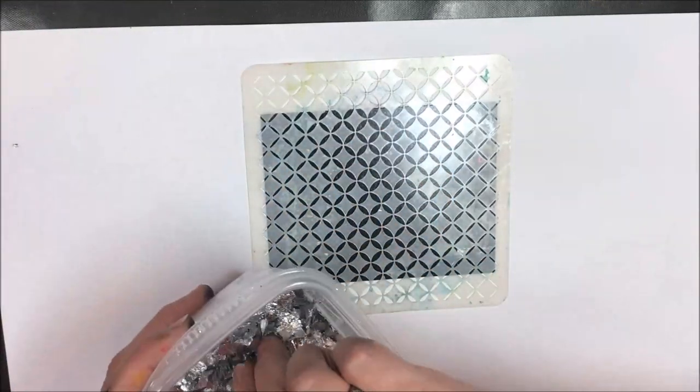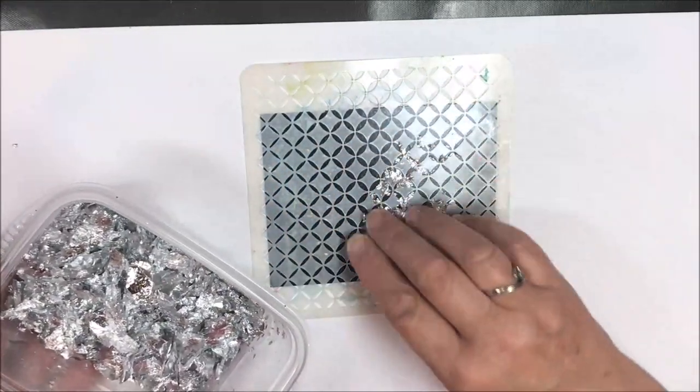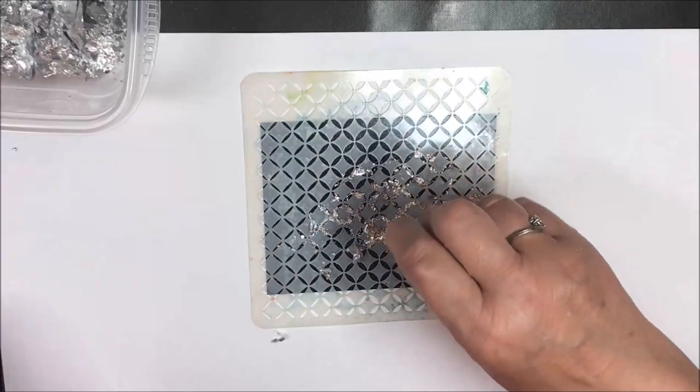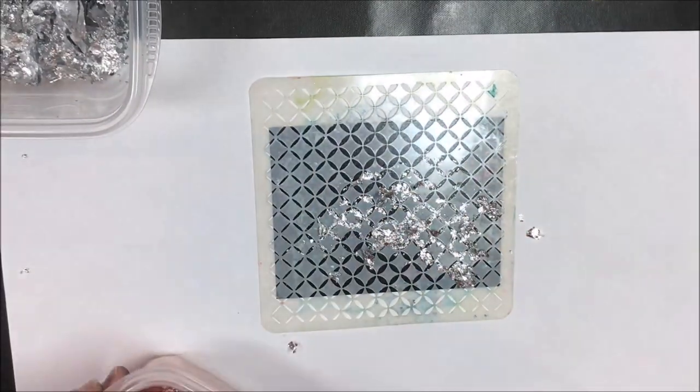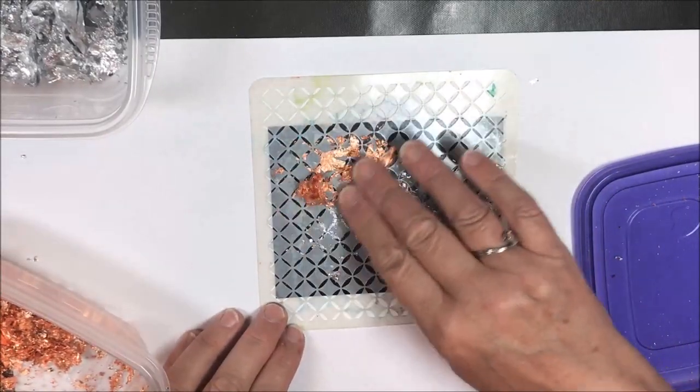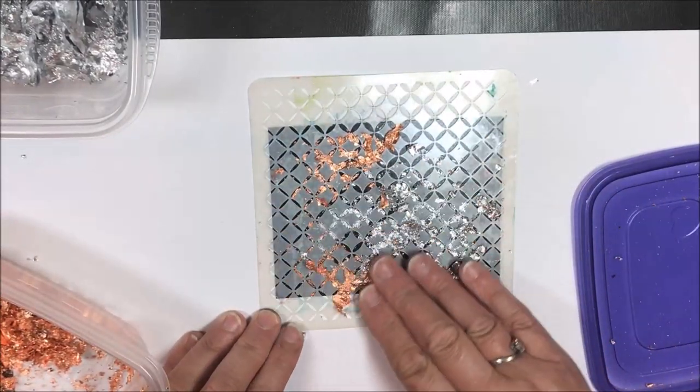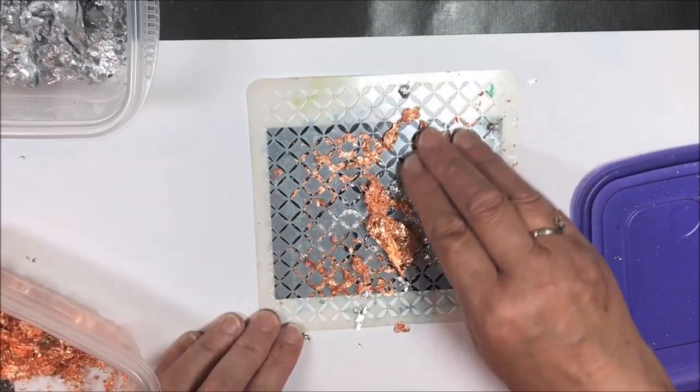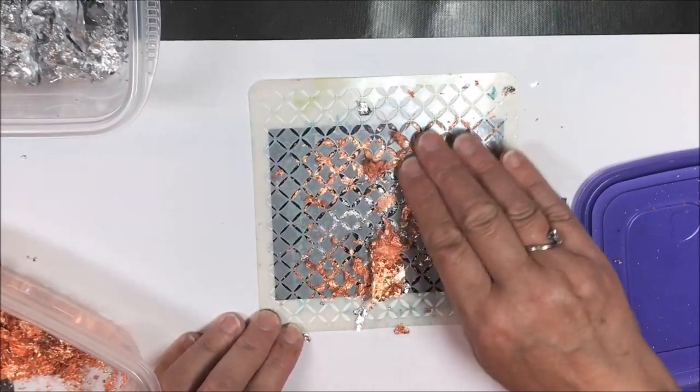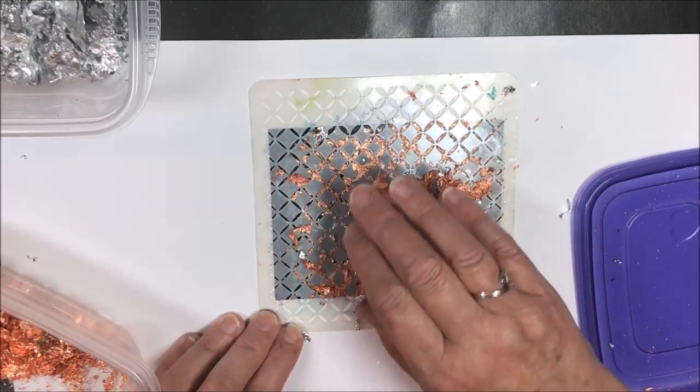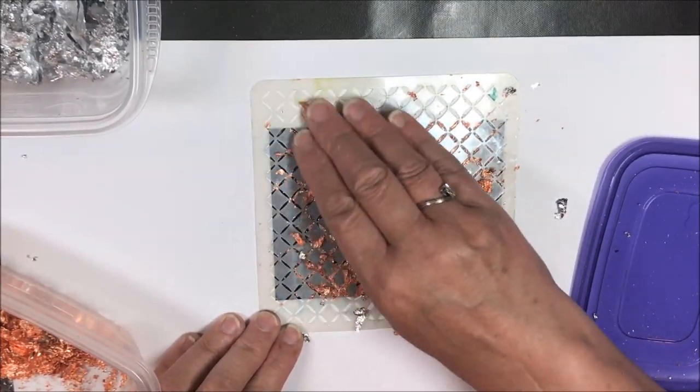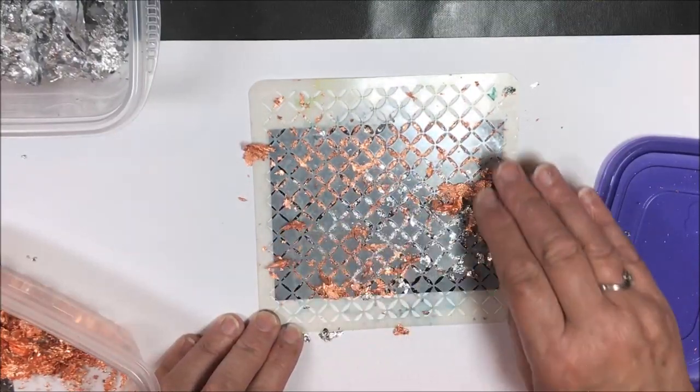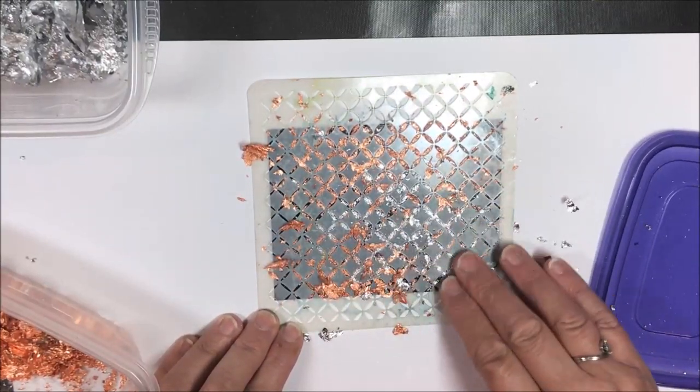The good thing about putting it right over the adhesive is I don't need to tack this down because that's held on there pretty well. As soon as I do that, I'm going to take the gilding flakes and start just putting them on top, spreading them a little bit so I don't get one bunch of color in one section. I really want a lot of copper on this one because I really love the copper on this card.